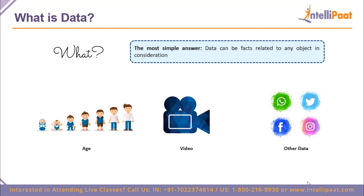When we talk about the different types of data, we have age, video, audio, images, social media data, and much more. For example, age is numeric data ranging from just above zero to 100 or more. Video is a type of unstructured data. We also have images, music, and tons of data from social media — messages on WhatsApp, tweets on Twitter, images, audio, and videos on Facebook and Instagram.